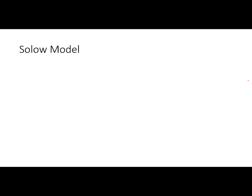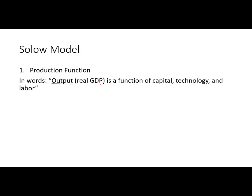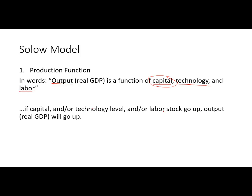Let's dive into the Solow model. We start with a production function. Most mathematical models start with a function — just an equation that relates an input to an output. The production function here is that output, which we measure as real GDP (Y), is some function F of three inputs: capital (K), technology (A), and labor (L). We're really going to focus on capital for starters, which ties into what we've previously discussed. If capital or technology or the labor stock go up, output will go up. The equation tells us exactly how much — if capital goes up, exactly how much do we expect GDP to go up?